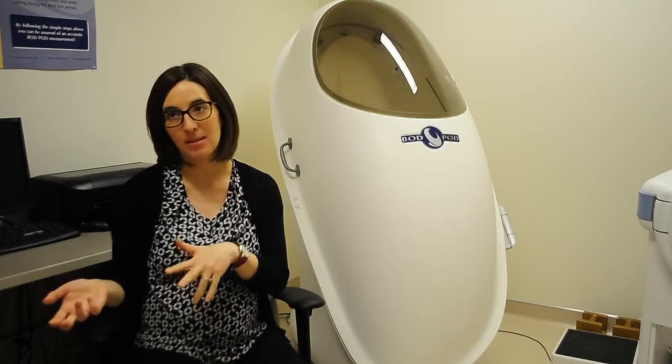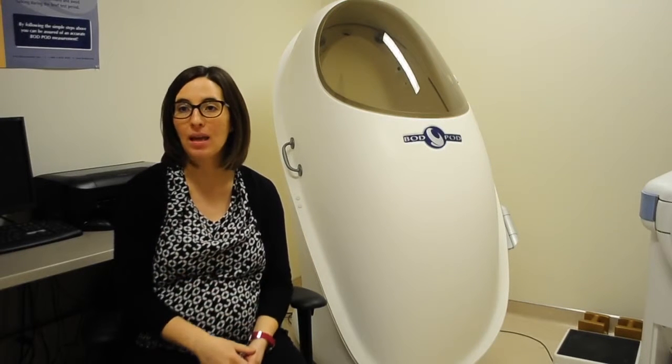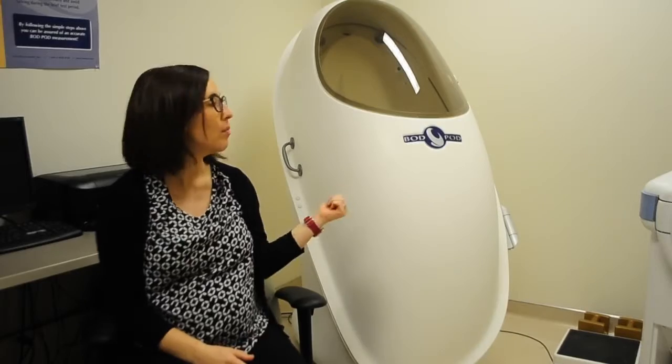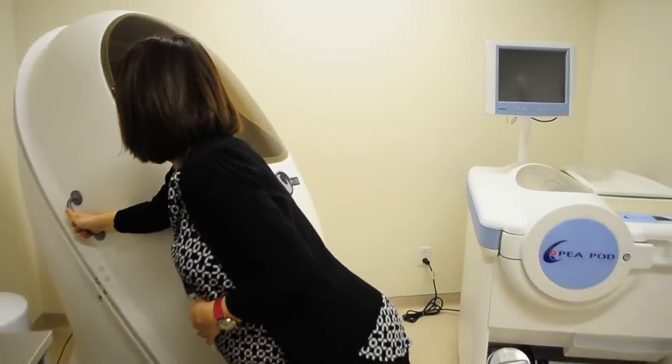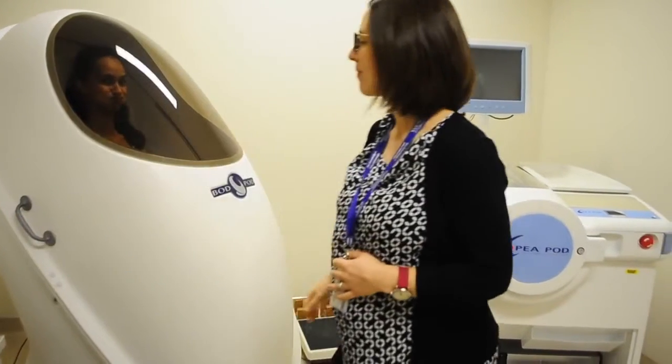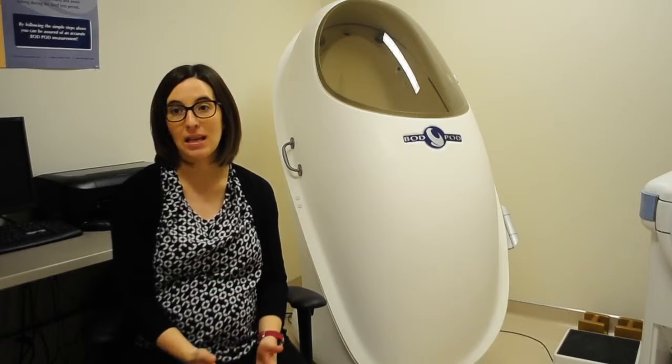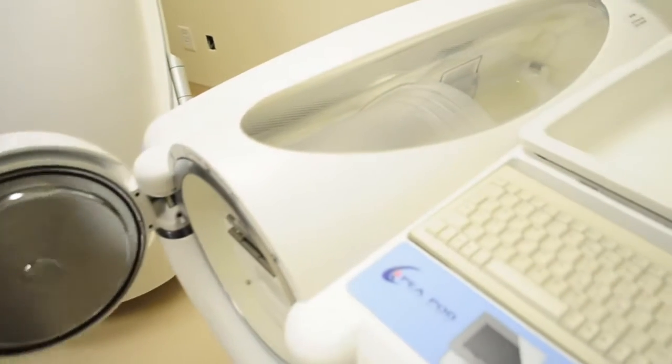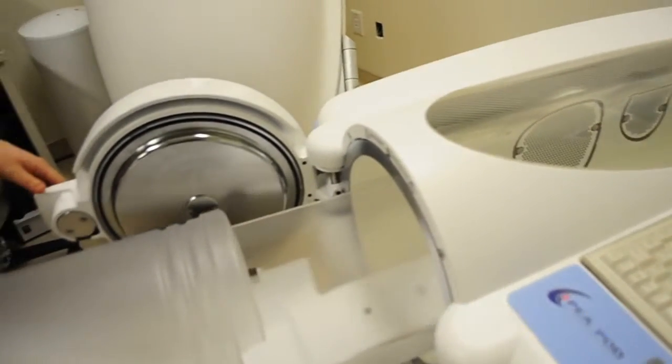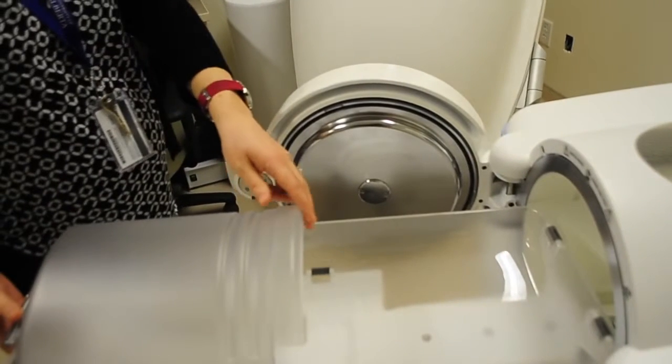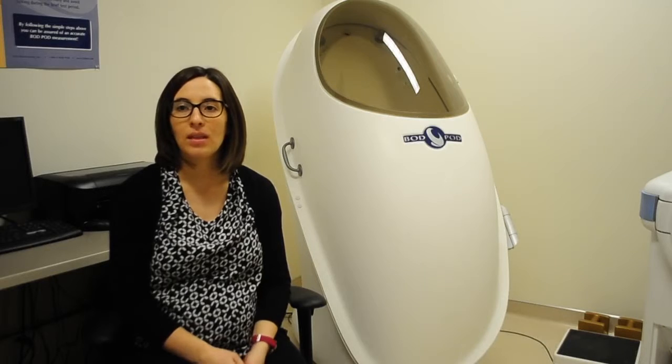The way that the Bod Pod works is that it measures body composition, so it provides an estimate of someone's fat mass and fat-free mass. We measure a person's height and their weight, and then with the Bod Pod we measure their body's volume. We know exactly how much air is contained within the pod, and then when someone sits inside of it, we find out how much air their body displaces from the pod. From that, we're able to figure out what their volume is, and then we have equations that take the height, the weight, and the volume to estimate someone's fat mass and fat-free mass.